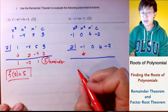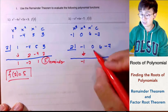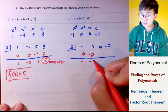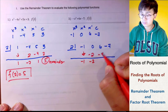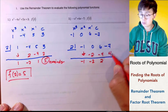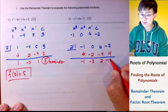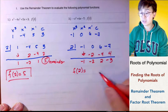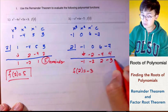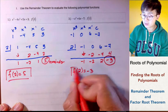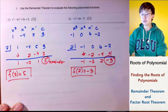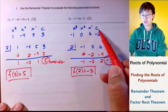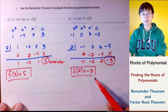Using synthetic division to find f of 2: negative 1 times 2 is negative 2, giving us 0, negative 2, negative 4, then 2, and 2 times 2 is 4, which equals negative 3. So f of 2 for this cubic function equals negative 3 because this is our remainder. If we substitute 2 into the function it equals negative 3.